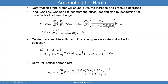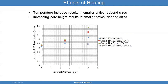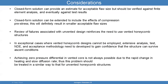You can then calculate the energy release rate, and once you do that, you can plug it in to calculate a critical disbond size. The effects of heating: when temperature increases, the pressure increases, therefore you need smaller critical flaw sizes. If you increase the core height, it also results in smaller critical flaw sizes. The closed-form solution can help a lot, but you want to also do a finite element model and make sure your non-destructive evaluation can find flaws in the critical flaw size range.